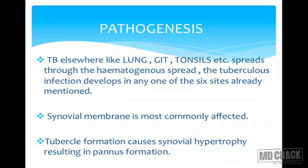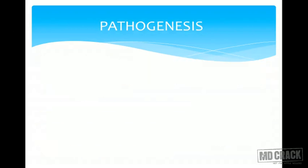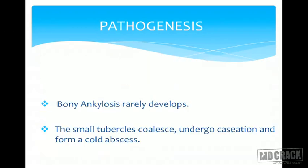The synovial membrane surrounding the joint becomes hypertrophied. There can also be bony ankylosis, which rarely develops. The small tubercles coalesce — that is, join together — and undergo caseation and necrosis, usually forming a cold abscess. Cold abscess is always associated with tuberculosis and you must always remember this.